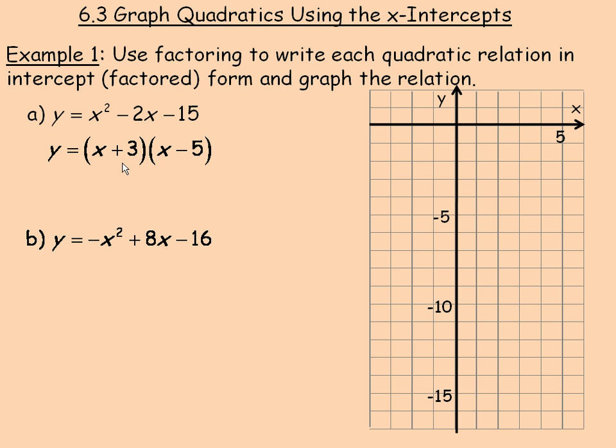To find the intercepts, the x-intercepts occur on the x-axis and any point on the x-axis has a y value of 0. So if the y value is 0 here, the only way y can be 0 if these two things multiply to give you 0 is if either x plus 3 is a value of 0.